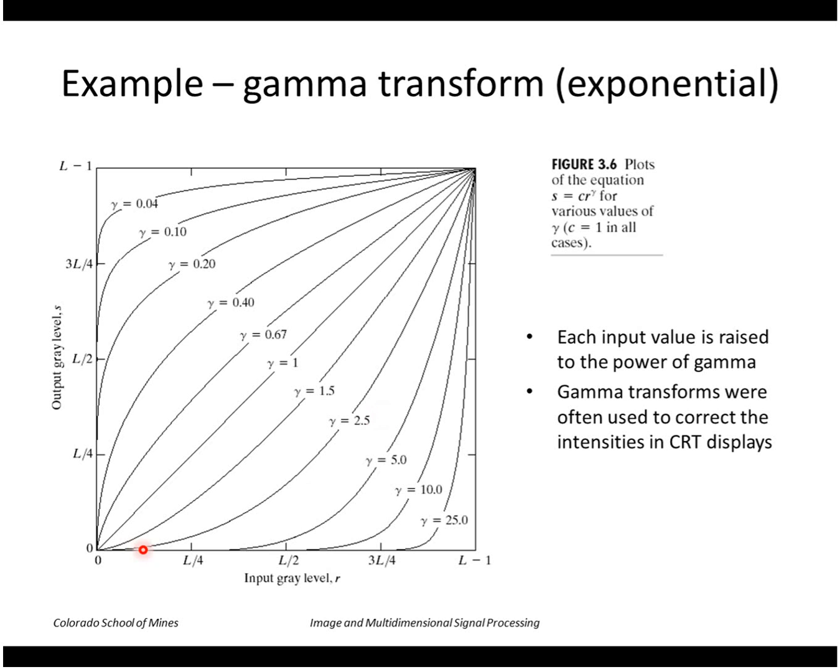Gamma values greater than one would enhance the high values of r at the expense of low values. Gamma values less than one would emphasize the low values, stretch those at the expense of the high values.